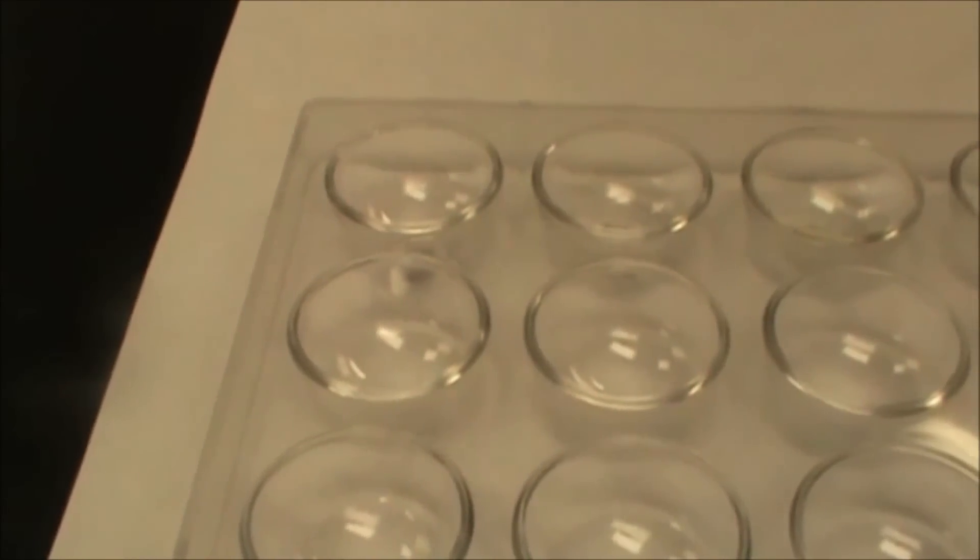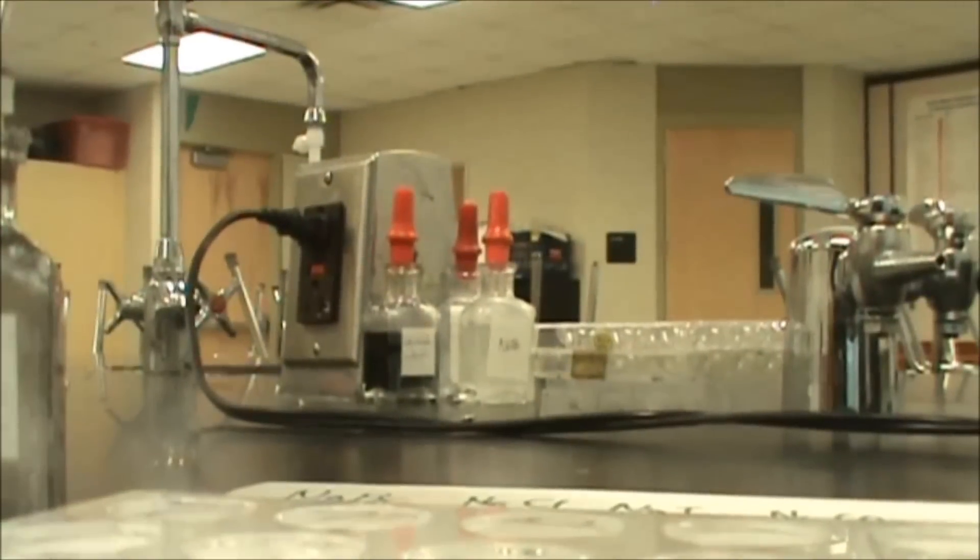So then what I'm going to do is I'm going to take silver nitrate and when I mix a drop of that with each one, then it's going to form a precipitate for each one, and they're going to be slightly different for each one.